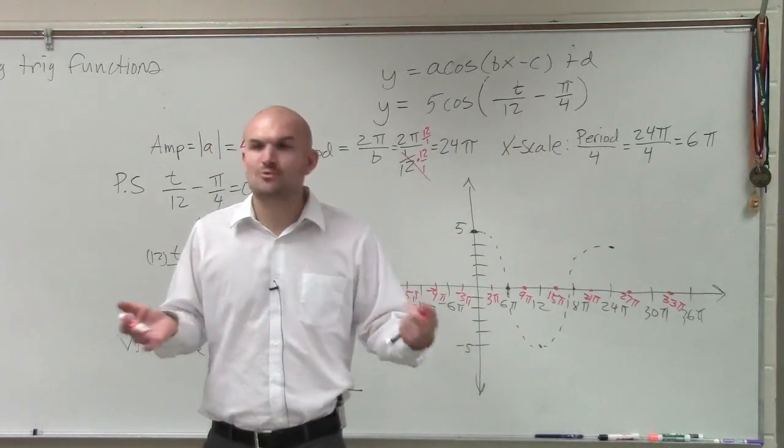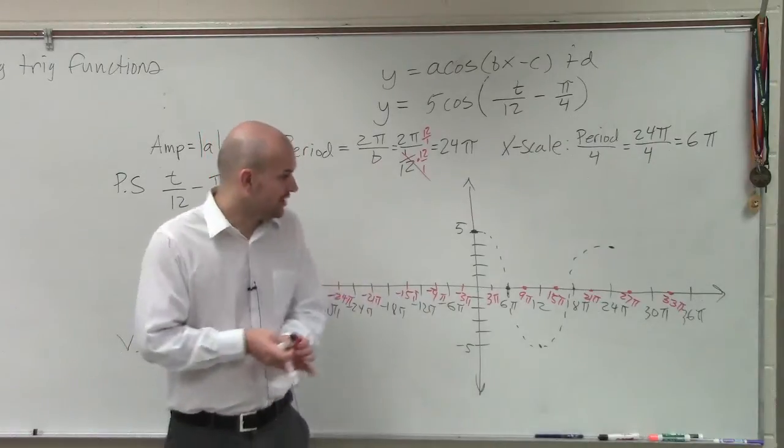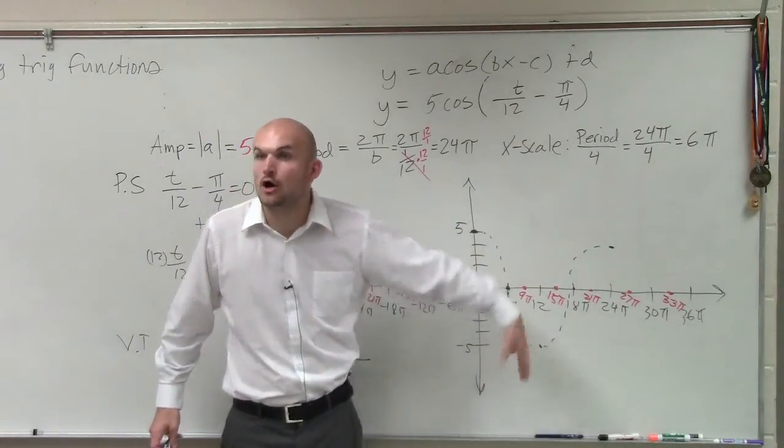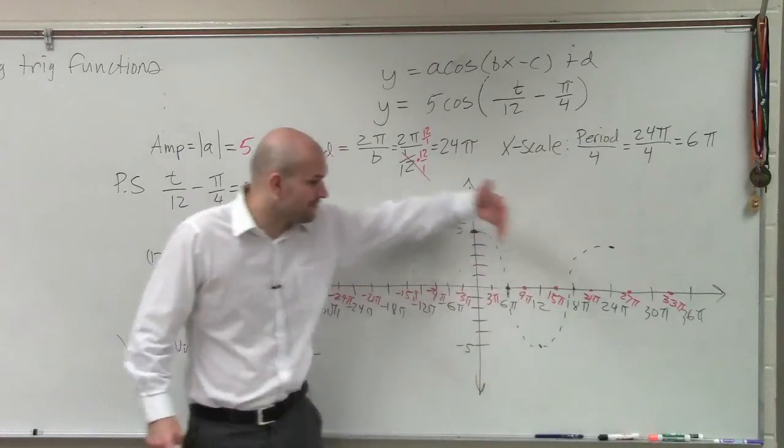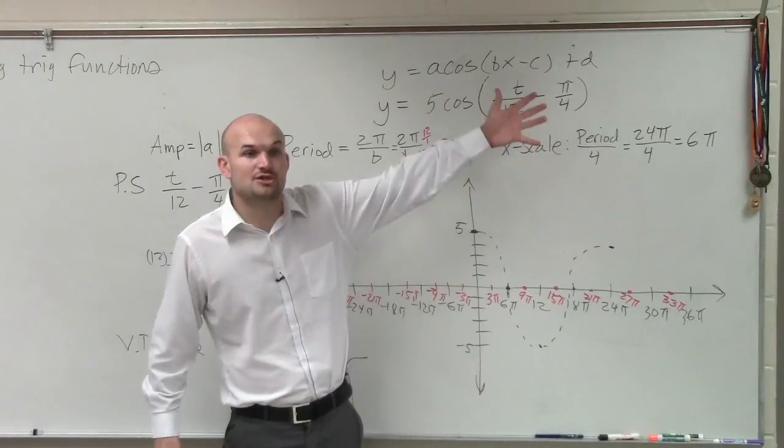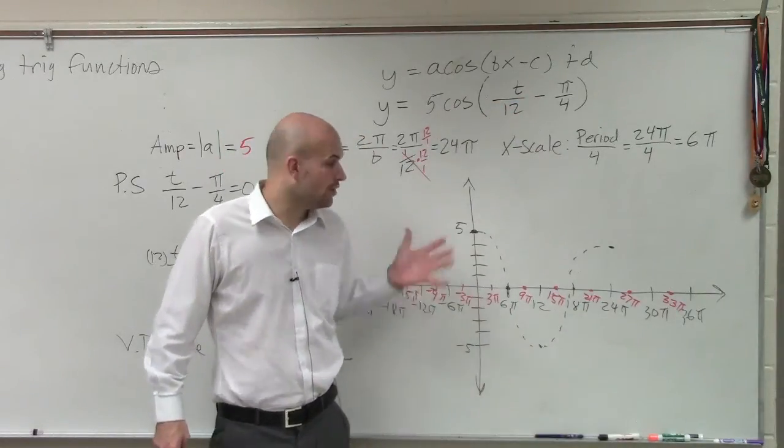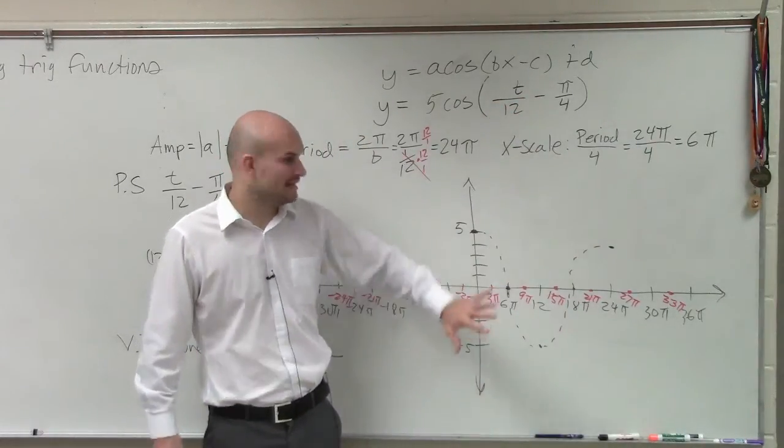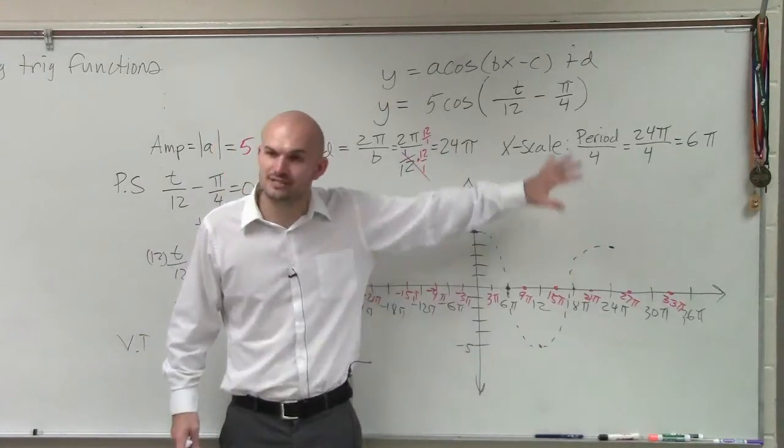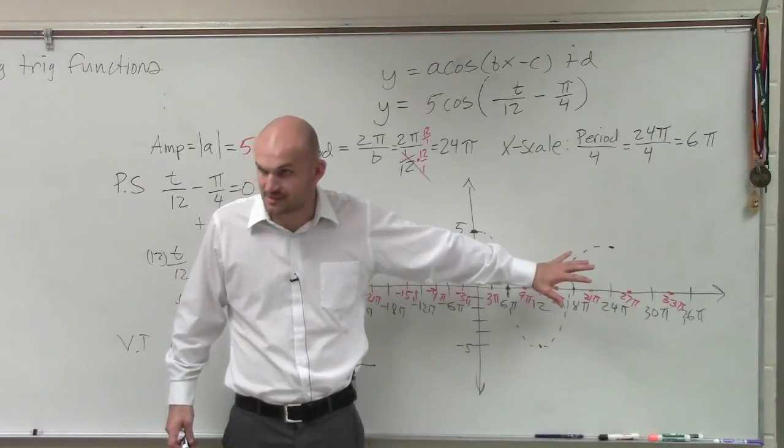Because the reason why we want to do this is because what if you guys have a reflection? You're going to have to take this black graph and reflect it over the x-axis. Or you're going to have to take this black graph and reflect it over the y-axis. Or you have to take the black graph and shift it up 2, down 5. Or we have to shift it left and right. So I like to graph it how it is correctly. And then I do the translations, I'll recall them, and reflections next.